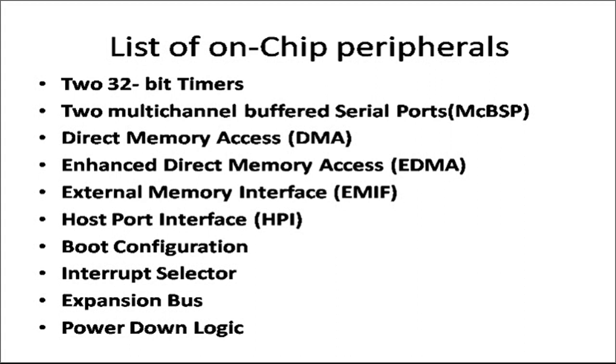To list out some of the on-chip peripherals available with the C67X processor: two 32-bit timers, two multi-channel buffered serial ports, which help in serial communication similar to what we studied in LPC 2148. Then direct memory access, which we talked about in the last lecture used when we need to transfer chunk of data from outside memory to the processor or from CPU to the outside memory. Next is enhanced direct memory access, an extended version of DMA, and external memory interface EMIF.